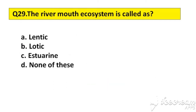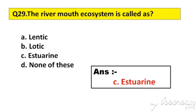Question number 29. The river mouth ecosystem is called. Option A: Lentic. B: Lottic. C: Estuarine. D: None of these. The right answer is option C, Estuarine.